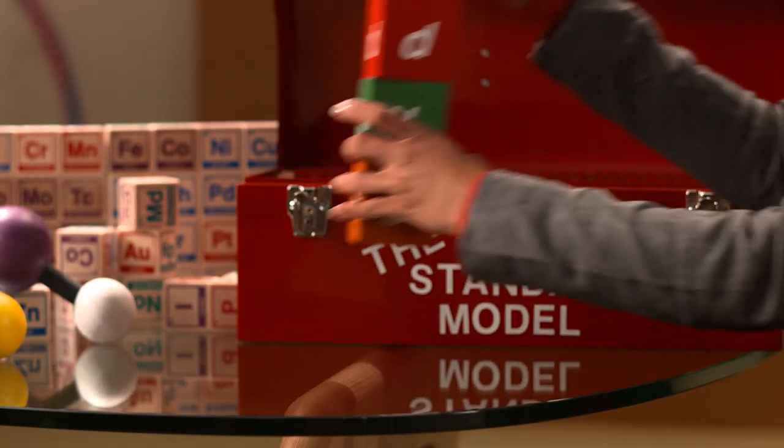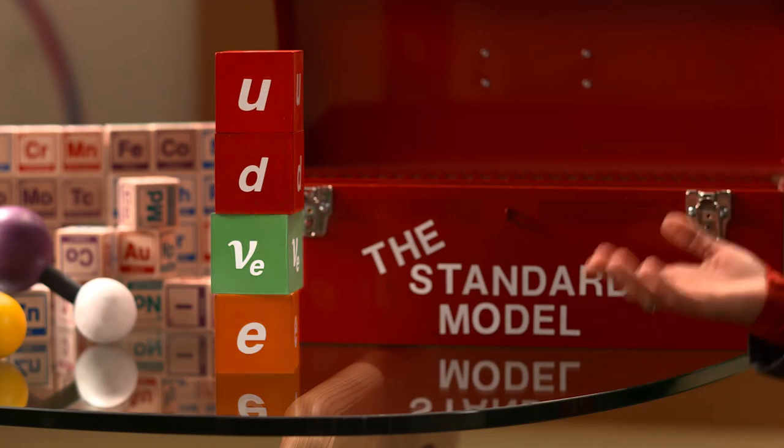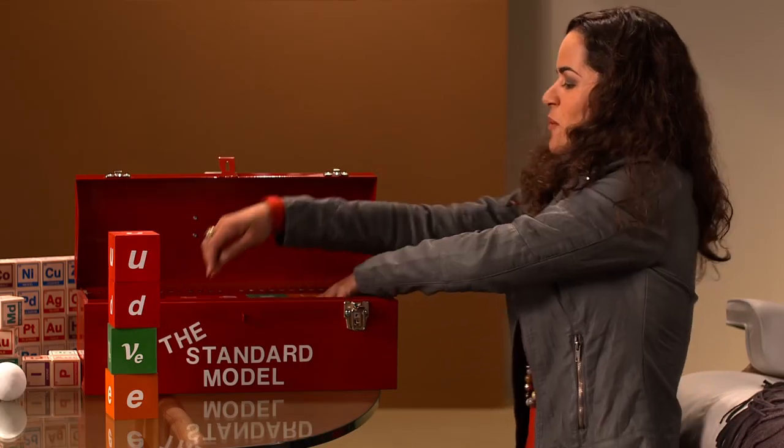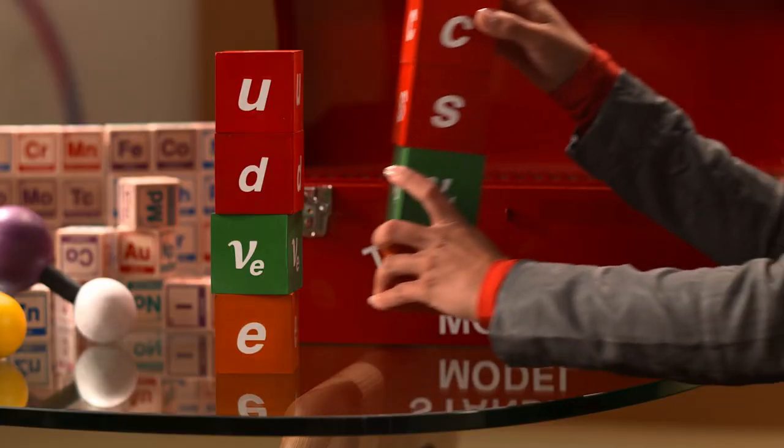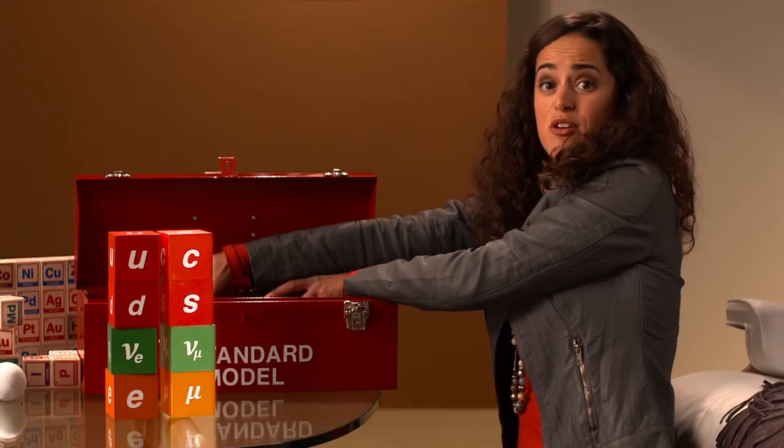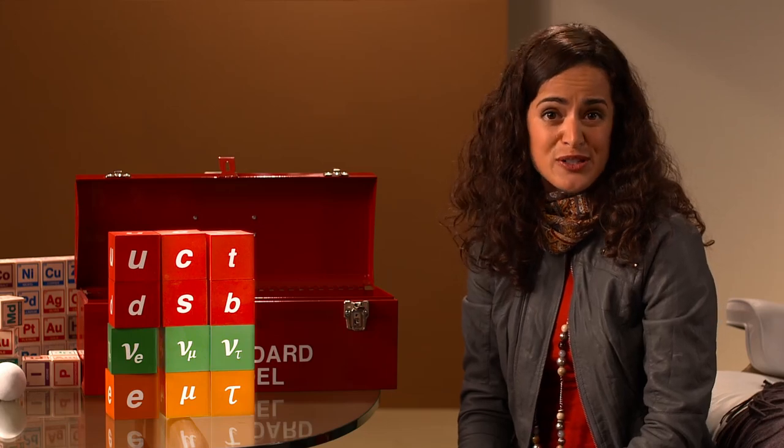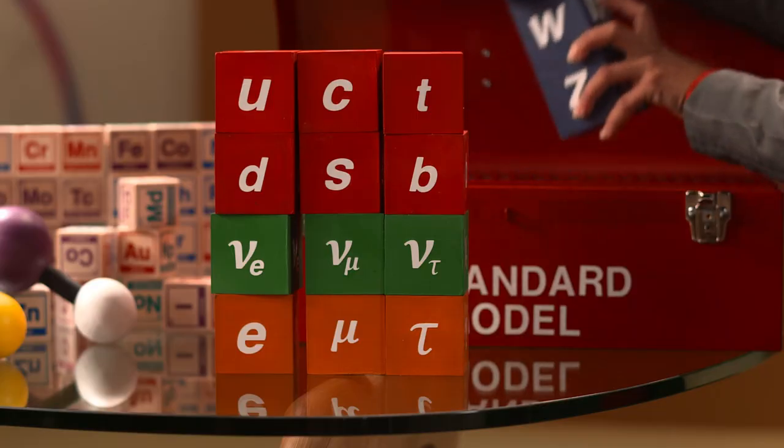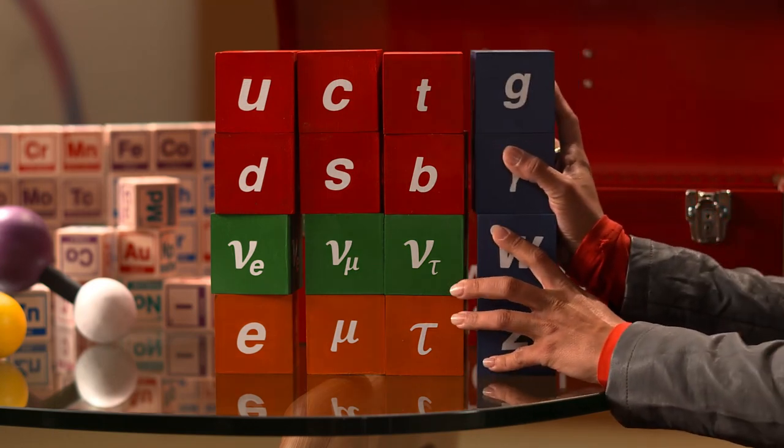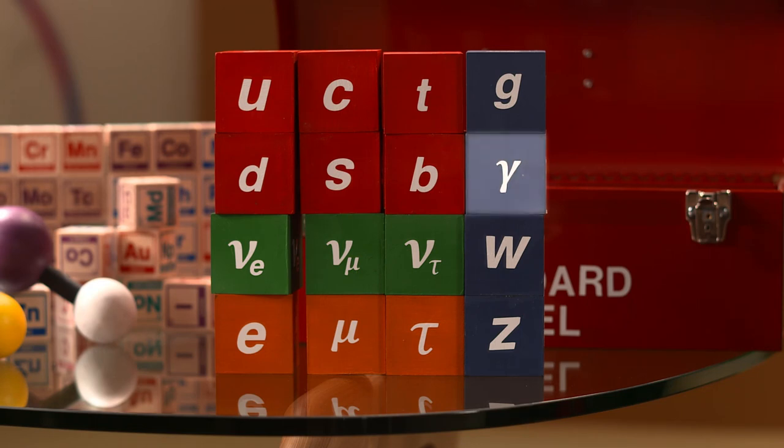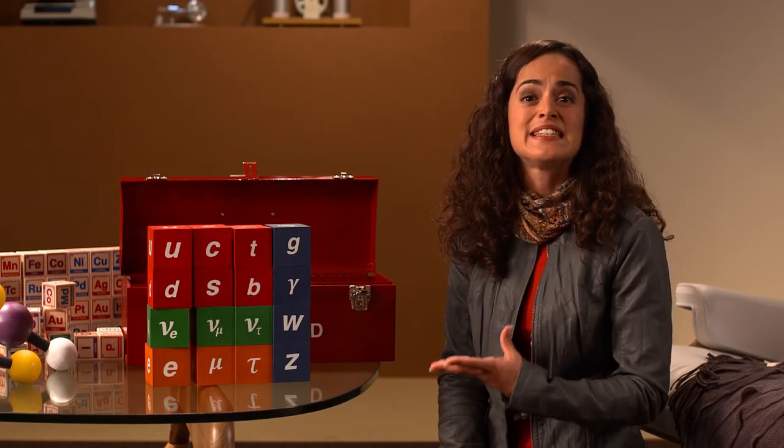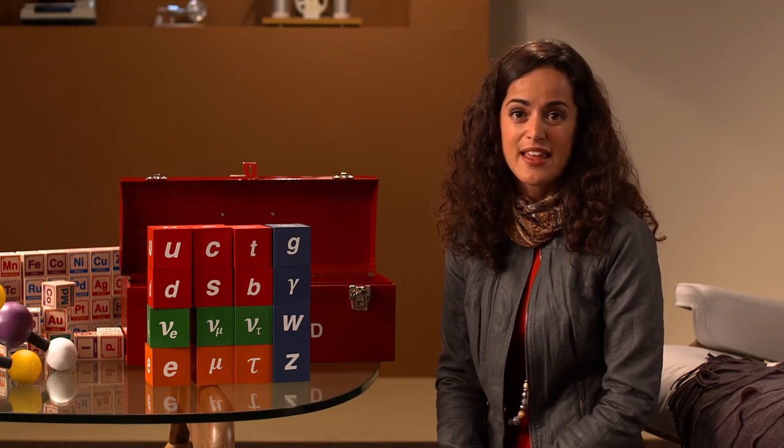D'abord, il y a les particules constituant la matière courante: l'électron, le neutrino et les quarks up et down. Puis, il y a ce qu'on appelle les deuxième et troisième générations de ces particules qui sont plus massives et instables, mais autrement identiques à leurs cousins plus légers. Dans le modèle standard, il y a aussi les particules associées à chaque type de force. Ces particules de force, appelées bosons, contiennent l'information d'une force précise. Par exemple, le photon contient l'information à propos de la force électromagnétique, le gluon pour la force forte et les particules W et Z pour une autre force appelée la force faible.